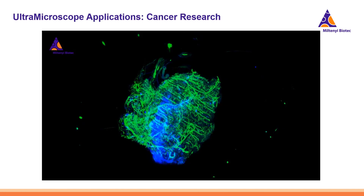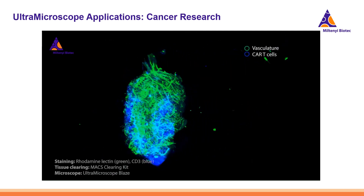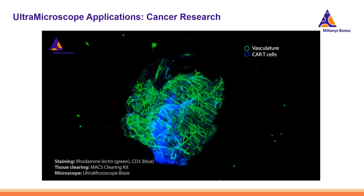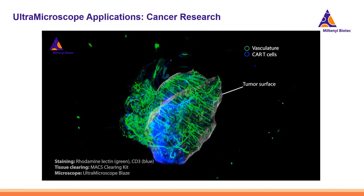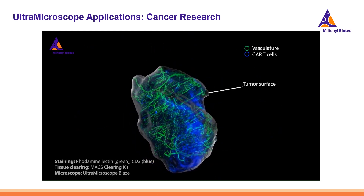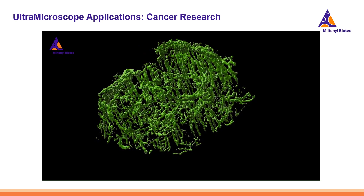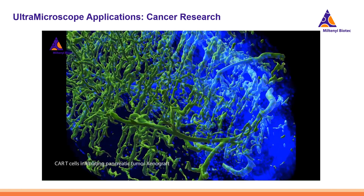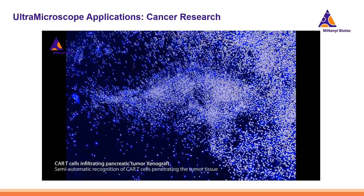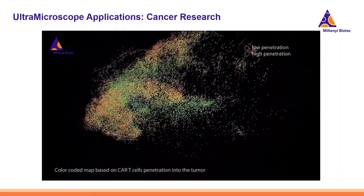Here is another example from cancer research. Tumors were excised from a tumor xenograft model, and the Ultra Microscope was used to visualize the penetration of CAR T cells into the tumor tissues — with vasculature shown in green and CAR T cells in blue. The acquired images provide valuable insights into the tissue distribution and penetration of CAR T cells within the tumor. This work was done by the Miltenyi R&D team, who performed computational analysis to precisely measure the distribution and penetration of CAR T cells in the excised tumors.